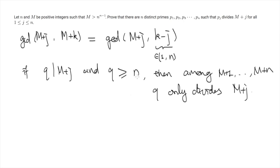Q is the only divisor of M plus J. So Q does not divide other numbers. Then in this case, we can simply take P_J as Q, and necessarily Q is different from other prime factors. So now we may wonder if this is always the case we can find a large prime factor.